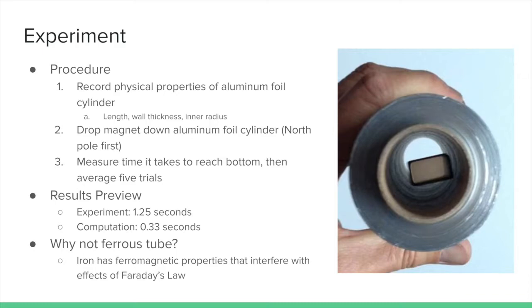In the experiment, my magnet took 1.5 seconds to fall, though this value is computationally predicted to be 0.33 seconds. Why are we not using a ferrous tube? Iron has ferromagnetic properties that interfere with the effects of Faraday's Law, so it is critical that our cylinder not contain iron.